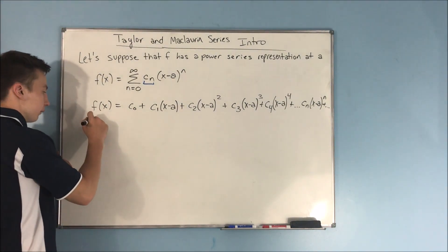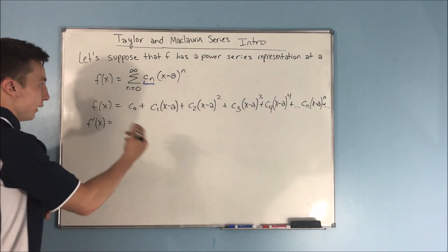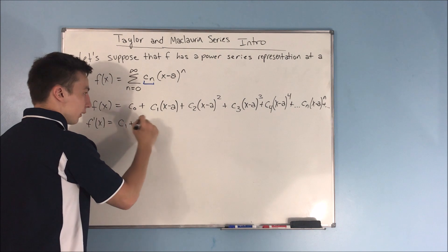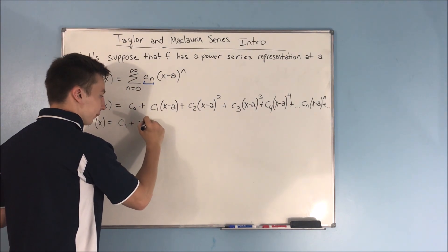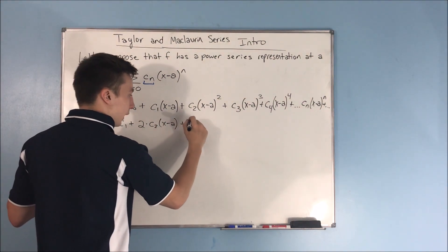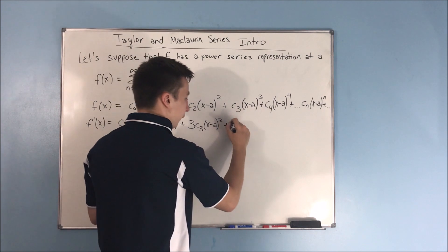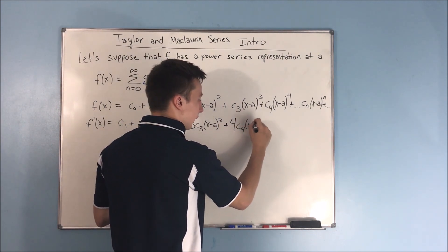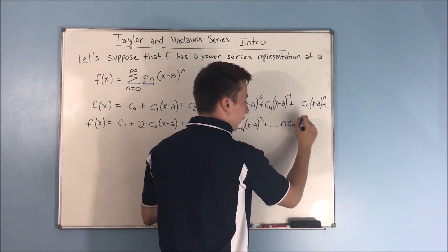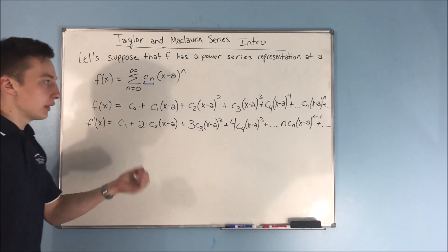What if we take a derivative? If we take a derivative, our constant goes away — that becomes zero. We have c sub 1, plus 2 times c sub 2 times x minus a to the first power, plus 3 times c sub 3 times x minus a to the second power, plus 4 times c sub 4 times x minus a to the third power, plus n times c sub n times x minus a to the n minus 1 power, and it goes on after that.